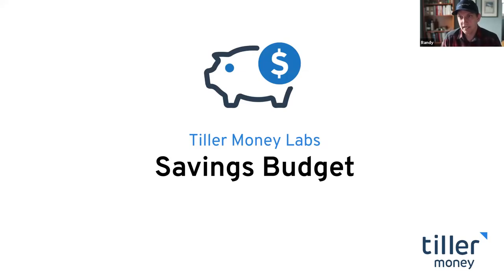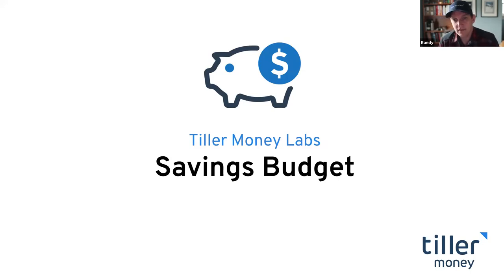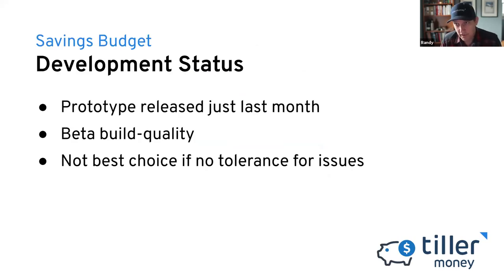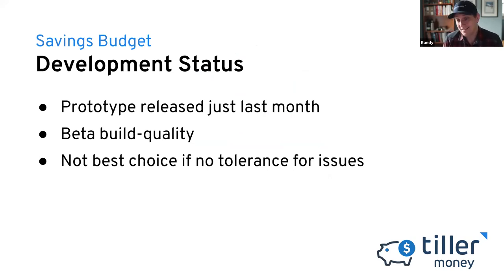Let's dig into the demo. Many of you are familiar with the foundation template that comes with Tiller Money feeds. Today we're going to talk about a new savings budget that allows you to add on or accrue balances within categories. Word of warning: this budget is very new. We've released it about a month ago and we've gotten a lot of feedback. It's gotten better every day, but if your budget is mission critical, this may not be the best choice. That said, it is working for many users right now, and if you're open to some experimentation and willing to try something new, we encourage you to do that.